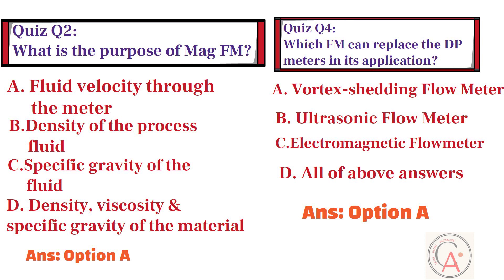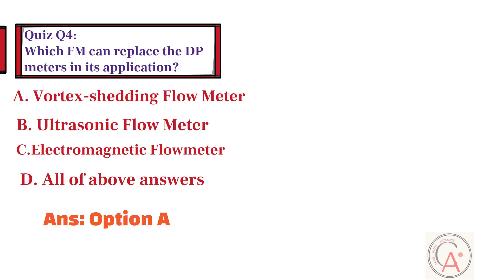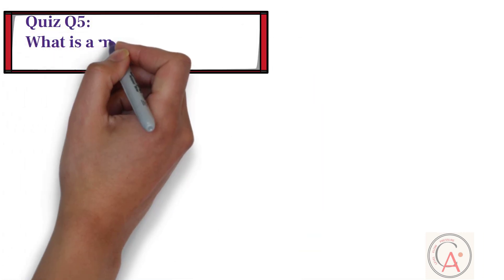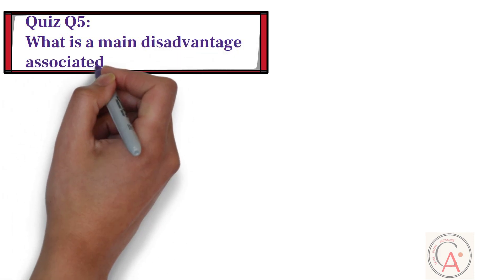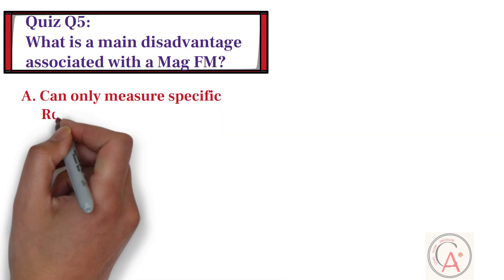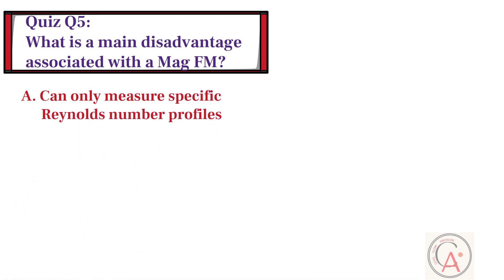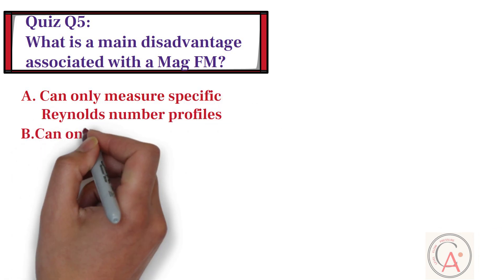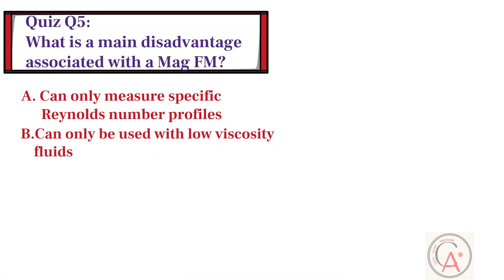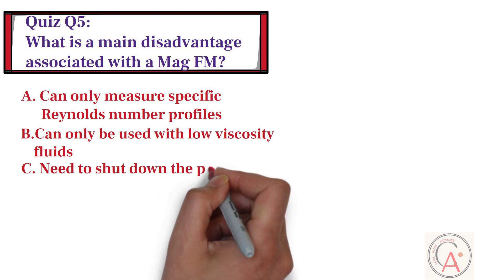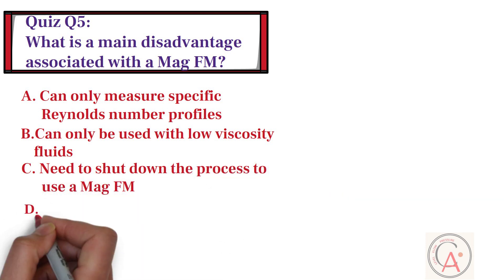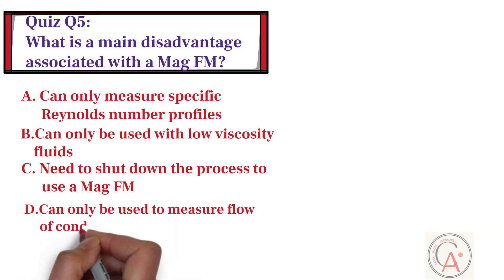Now let's go to the fifth quiz question. What is a main disadvantage associated with a magnetic flow meter? Option A: it can only measure specific Reynolds number profiles. Option B: it can only be used with low viscosity fluids. Option C: you need to shut down the process to use a magnetic flow meter. And option D: it can only be used to measure the flow of conductive liquids.